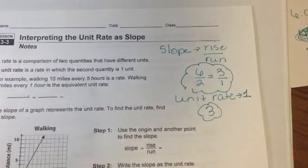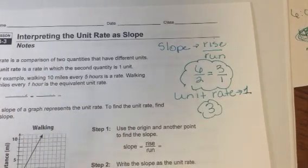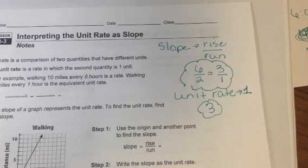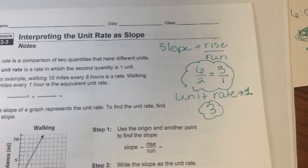That means, say it was running 3 miles per hour, you would be at 1 hour, you would be at 3 miles.